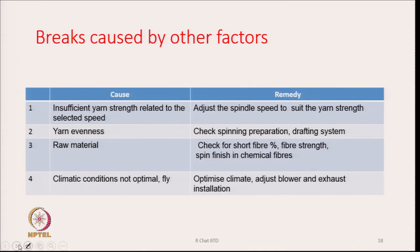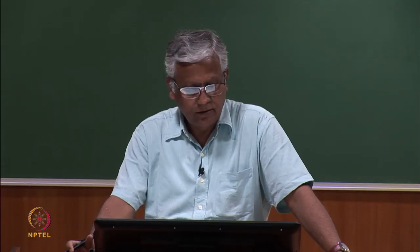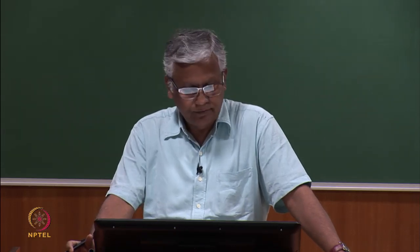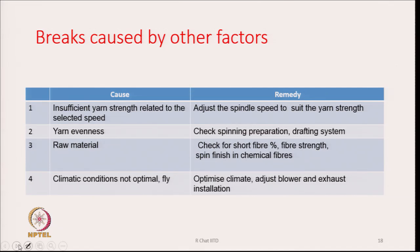We have to reduce the operating stress level to suit the yarn strength, because once the fiber has been chosen, we will not be able to change it. Yarn evenness: if evenness is not good, more breaks will occur — check the spinning preparations and the drafting system to find what has gone wrong and take corrective actions accordingly. Raw material: sometimes raw material could be a source of a lot of breakage. The main things to check are the short fiber percentage and the average strength of the fiber. In the case of synthetic fibers, the spin finish also needs to be checked, and corrective actions taken if possible.